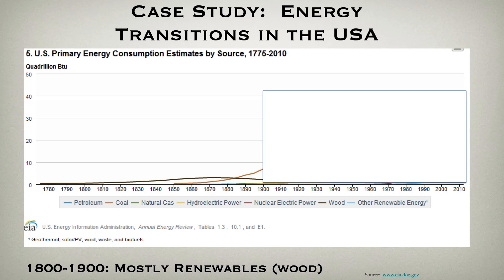If you take a chunk of coal, it'll burn a lot longer and hotter than a similar-sized chunk of wood. So this transition was driven by convenience, availability, and energy density. Even though in some regions increasing urbanization made it harder to get wood, it really wasn't that the US ran out of wood. There was a move to coal because coal essentially worked better — it was higher energy density, burned hotter, and was easier to move. A similar size or weight of coal would provide more heating than wood. The transition was driven by convenience and availability, not scarcity.